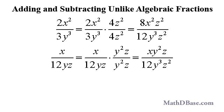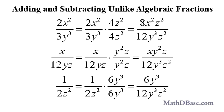x over 12yz lacks the factor of y squared z. After multiplying, we have xy squared z in the numerator. 1 over 2z squared lacks the factor of 6y cubed. And after multiplying, we have 6y cubed in the numerator.